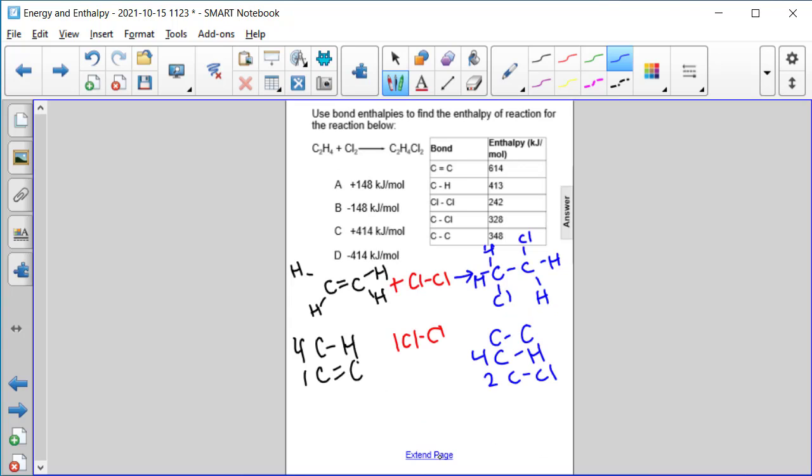Now, let's find our delta H for the reaction. So let's start with our reactants. So it'll be four times carbon-hydrogen single bond is 413, plus one carbon-carbon double bond is 614, plus the chlorine-chlorine single bond is 242. Those are our reactants. So I'm going to put some brackets there just to show we're adding those all together.